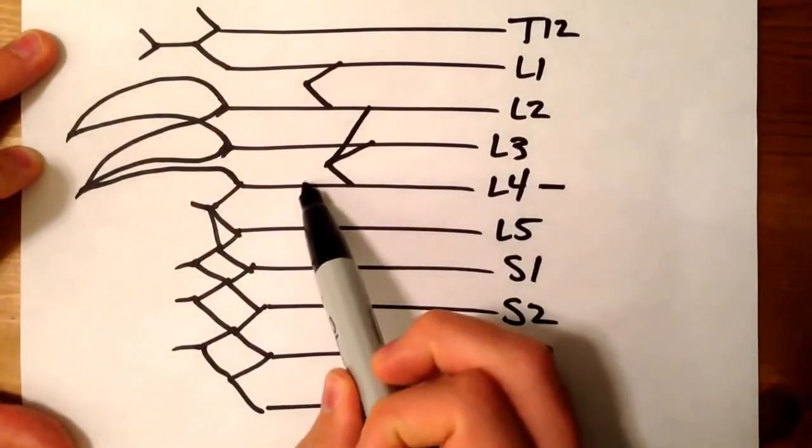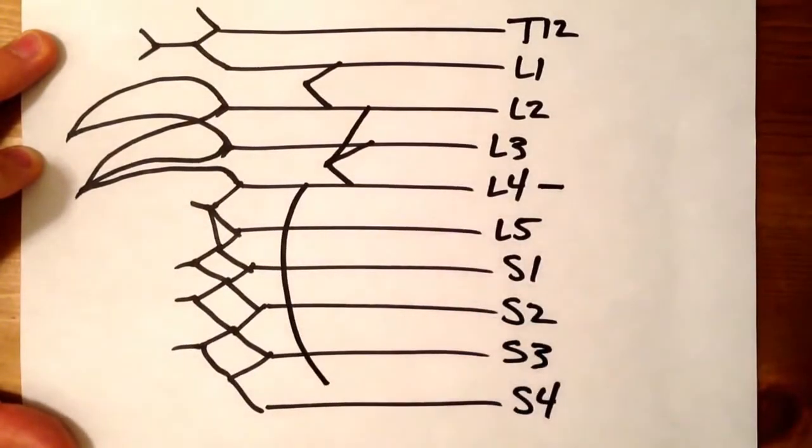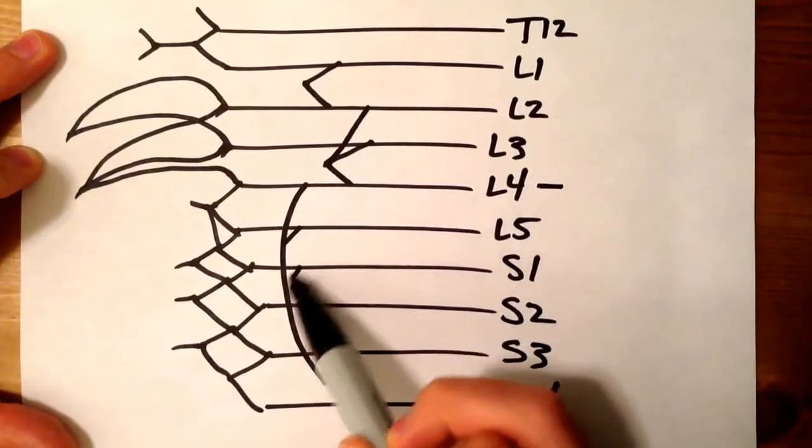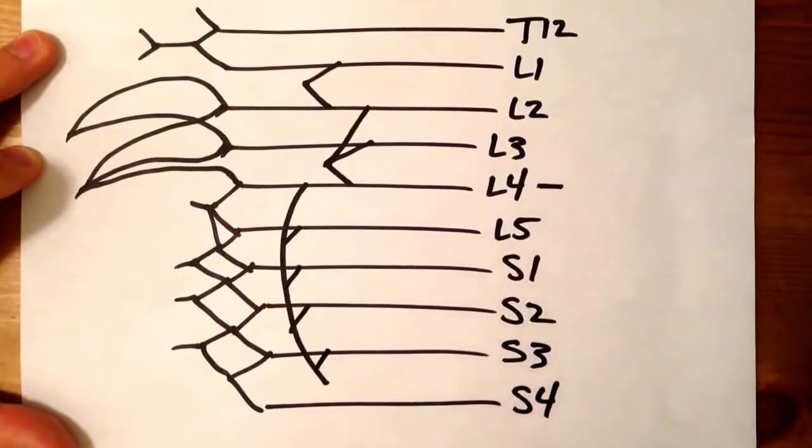From L4, we're going to draw a line down to S3, S4 space, and we're going to connect L5, S1, S2, and S3 to it.